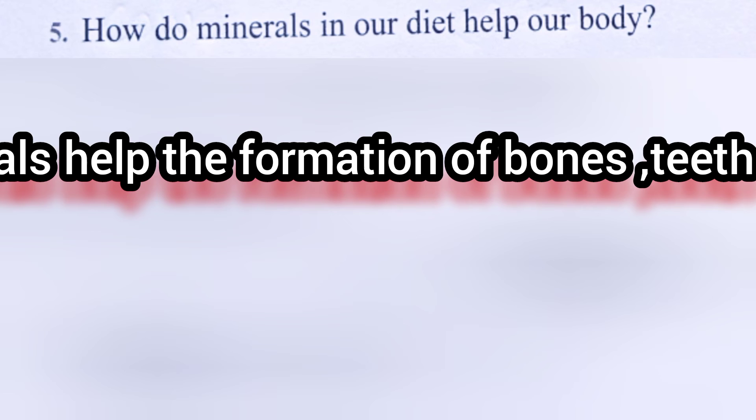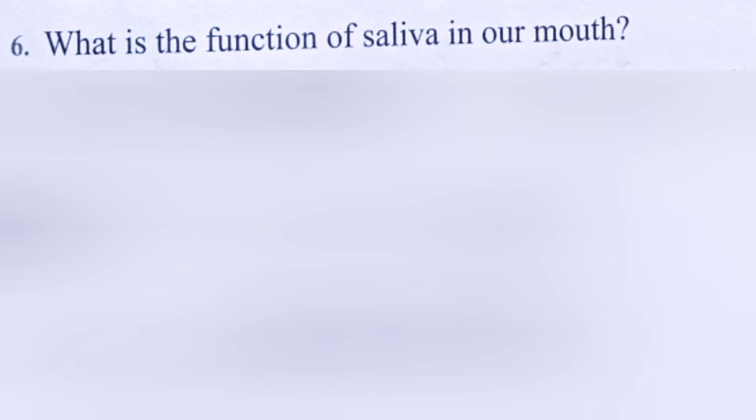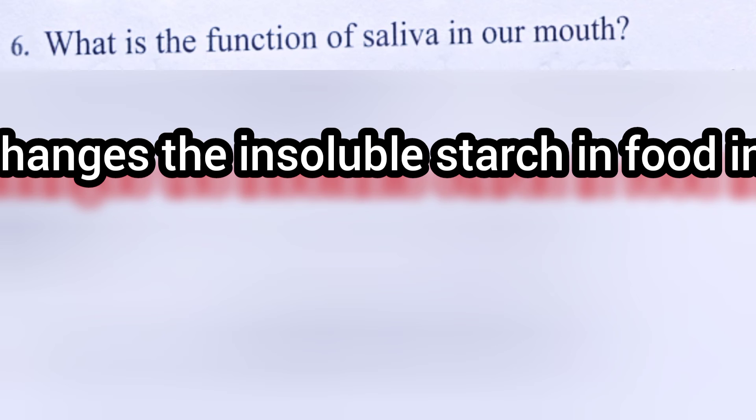Question four: Which nutrient gives us more energy — carbohydrate or fat? We get more energy from fat, so the answer is fat. Question five: How do minerals in our diet help our body? Minerals help in the formation of bones, teeth, and blood. Question six: What is the function of saliva in our mouth? Saliva changes the insoluble starch in food into soluble sugar.